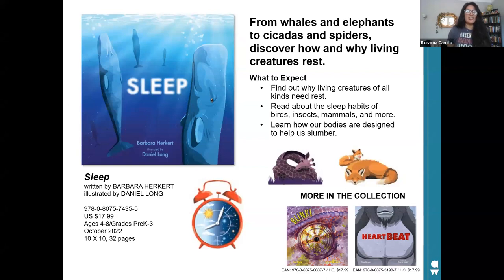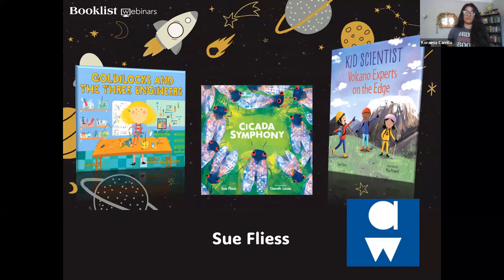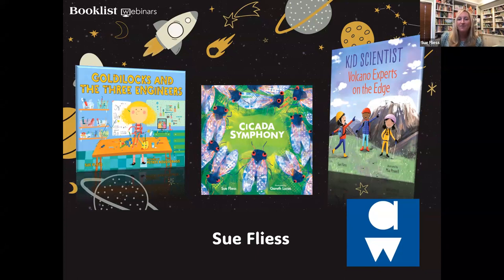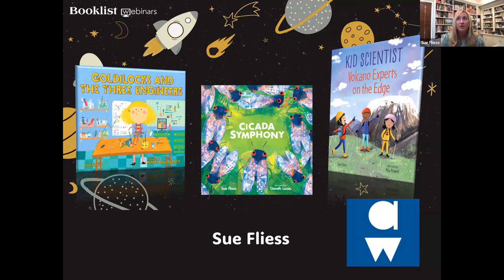Now I'm going to pass it off to Sue. Hi, I'm Sue Fleece. I'm the author of over 50 children's books, and I am so pleased that I get to work with Albert Whitman. They're a great publisher and I have so many books with them right now, which is really fun and amazing.